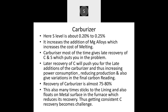The final carbon is inconsistent in the case of late addition of carburizer. Recovery of carburizer is almost 75 to 80%. It also tends to stick to the lining and float on the metal surface inside the furnace, which reduces its recovery. Getting consistent carbon recovery becomes a challenge with carburizer.